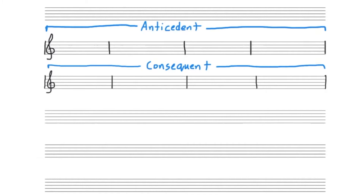A question, by definition, leaves something unresolved, therefore needing an answer. For our first phrase, the easiest way to leave it unresolved is to end with a half cadence, a five chord. For our second phrase, the easiest way to end it resolved, and therefore as an answer, is to end with an authentic cadence, five followed by one.